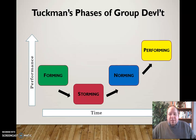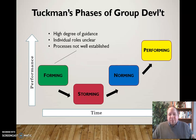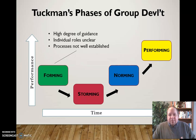Looking at each stage individually: in forming, we tend to see a high degree of guidance needed. Individual roles are unclear and processes are not well established, because this is really just the initial group formation. Things aren't very well defined at that time, so there's a little bit or a lot of chaos depending on the situation, and they need a high degree of guidance from outside sources or whoever's directing the group.